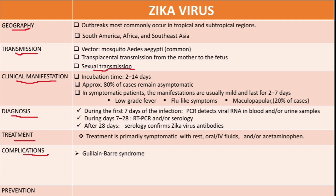The first complication of Zika virus is Guillain-Barré syndrome (GBS), which is an ascending flaccid paralysis. The second complication occurs when infection happens during pregnancy.